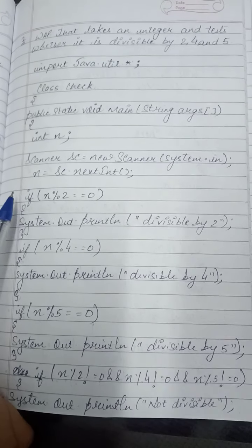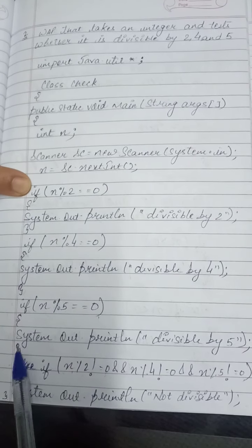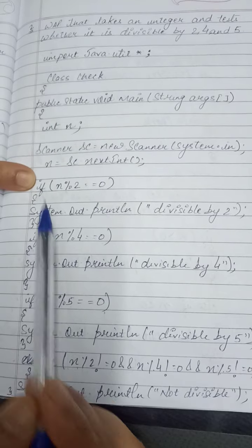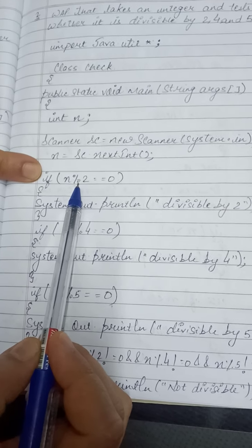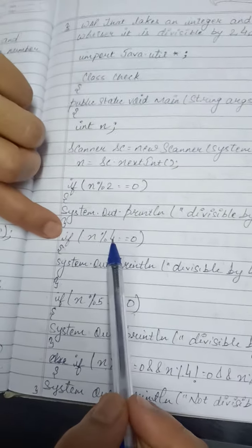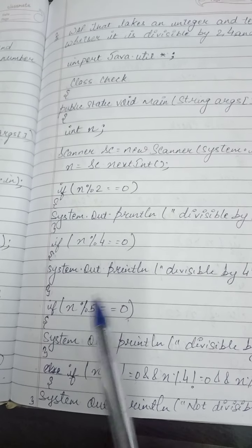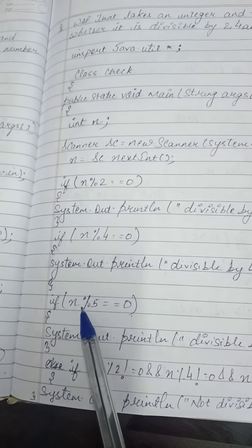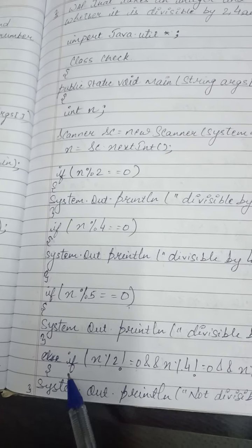Now let's trace with n = 8. The if statements work on multiple conditions — if two or three conditions are true, all the corresponding statements execute. 8 modulo 2 equals 0, so it prints 'divisible by 2'. 8 modulo 4 equals 0, so it prints 'divisible by 4'. For 8 modulo 5, the remainder is 3, which is not equal to 0, so it skips that statement and jumps to the last if.